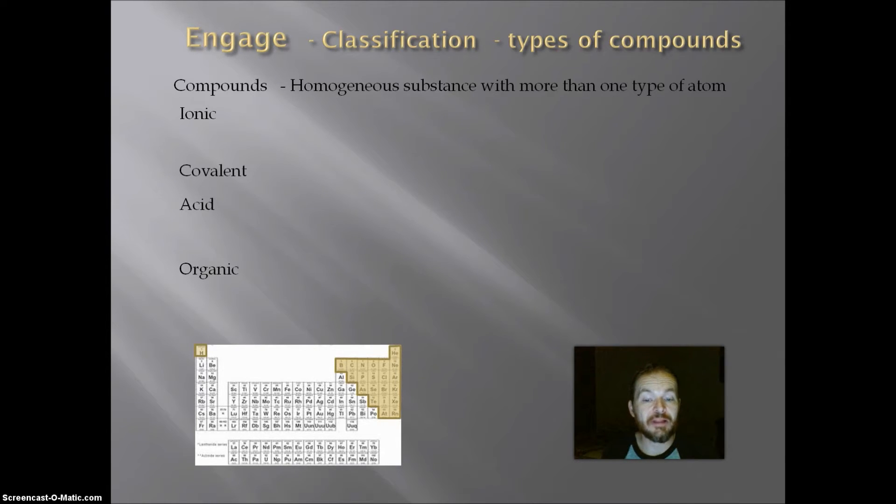So, on the periodic table, elements can be classified as either non-metals, which are the shaded area on this periodic table, or as metals, which is the unshaded area on the periodic table.